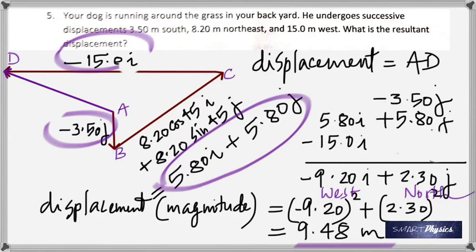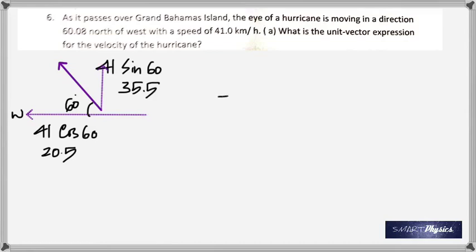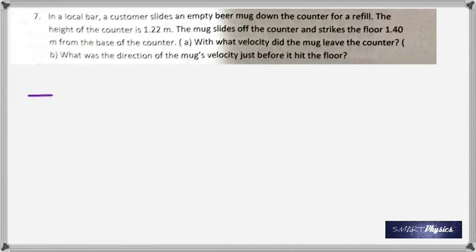The eye of a hurricane is moving in a direction 60 degrees north of west with speed 41 kilometers per hour. What's the unit vector expression? Simple enough, just resolve it into components. 41 cos 60 is along the negative direction, so negative 20.5i. This is along the positive, so it's positive 35.5j.